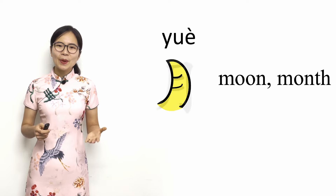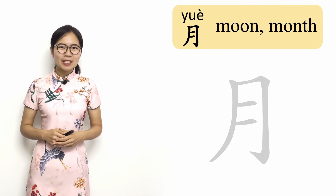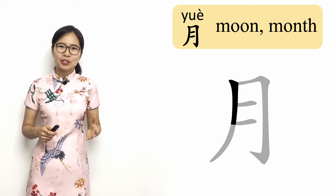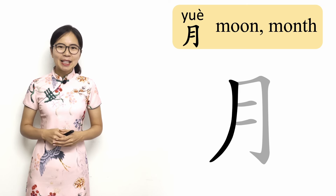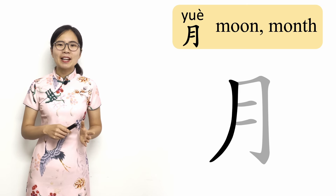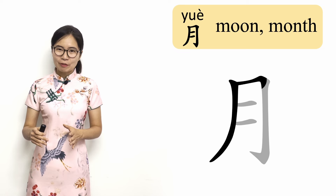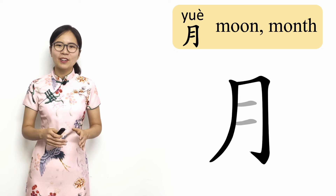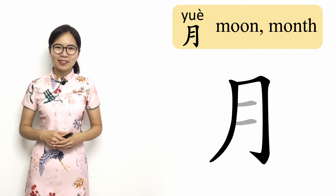月 is written using four strokes. First comes a large downward stroke to the left. Next comes a stroke that first moves to the right and then down with a hook. And finally, there are two horizontal strokes.